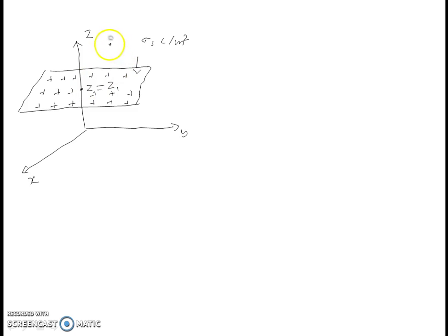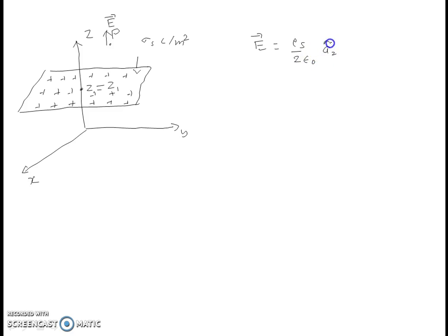In the last class we saw that at any point P, the electric field is pointing away from the sheet of charge. It is given by E equals rho_s divided by 2 epsilon_0, in the az direction. This expression applies for z greater than z1 — that is, for all points above the z equals z1 plane.